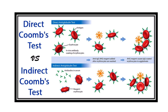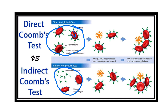In the direct Coombs test, the red blood cells present in the body are collected, a reagent solution is added, and if there is a reaction, the direct Coombs test is positive. In the indirect Coombs test, the reagent is given twice: first, antibody is added to the serum, which binds with the RBCs, and second, another substance is added that binds with the previously sensitized RBCs.